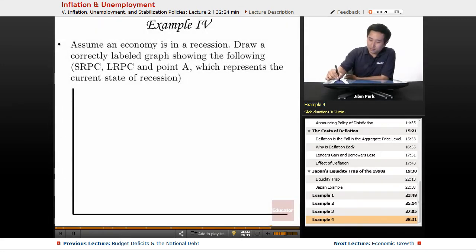And the final example: assume an economy is in a recession. So when you're drawing an aggregate demand aggregate supply curve, the potential output is going to be to the right of the actual output.